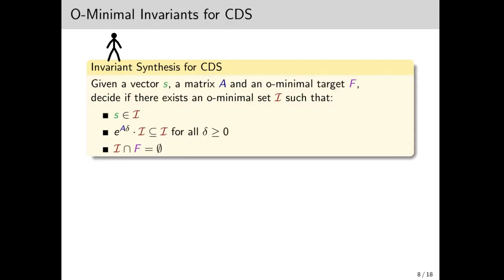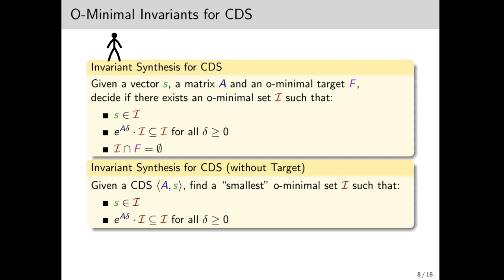We can now formulate the problem we study. Given a vector s, a matrix A, and an O-minimal target f, we want to decide if there exists an O-minimal set i that is invariant and is disjoint from the target. But for starters, we're actually going to consider an ill-defined variant of this problem, where we don't have a target.